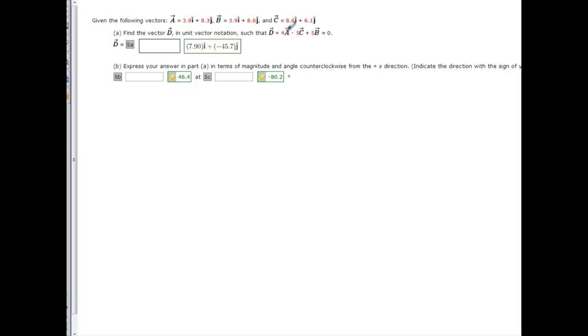This one you have D plus 4A minus 5C plus 5B is equal to 0. All that means is this. If you sum up the I components of this, or the I hat components, you must equal 0. If you sum up the J hat components, you must equal 0.